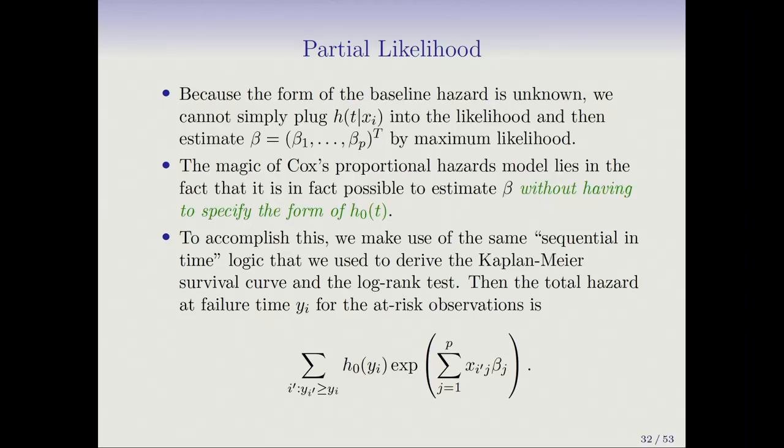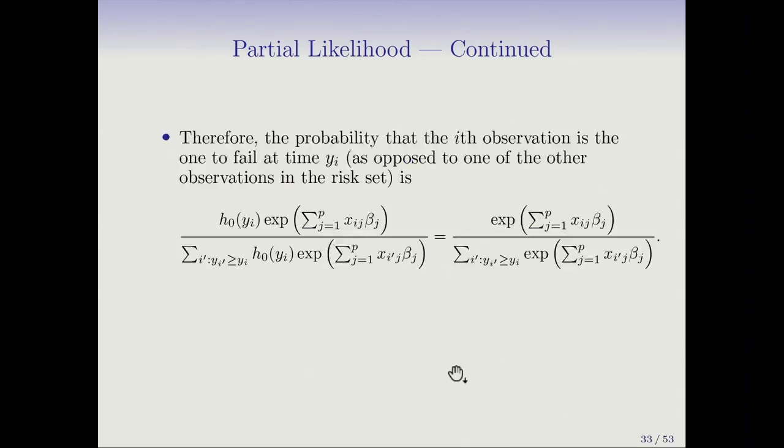And we're going to use the same kind of sequential in time logic that was used to derive the Kaplan-Meier curve and the log rank test. So if we're at a given time yi, then the total hazard for all the people at risk at that time is just the sum of their hazards, right? Here it is. So this is the sum over all people that were still at risk at a given, they hadn't died or been censored by time yi. Then suppose we look at the relative risk of the person who died at that time versus all the people who are at risk.